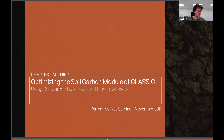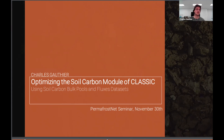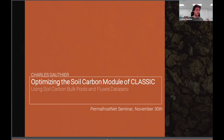Thanks a lot for this introduction. It feels special to be on this side of the presentation for once — I used to be organizing this seminar. I'll be talking today about my research, which mainly is about optimizing the soil carbon parameters of CLASSIC, which is the model developed by Environment and Climate Change Canada. I'm using Bayesian optimization to do it, as well as some data sets. My goal today is to go over all of this but keep it at a good level for everyone, because not all of us are doing modeling, so I'm trying to make it as accessible as I can.